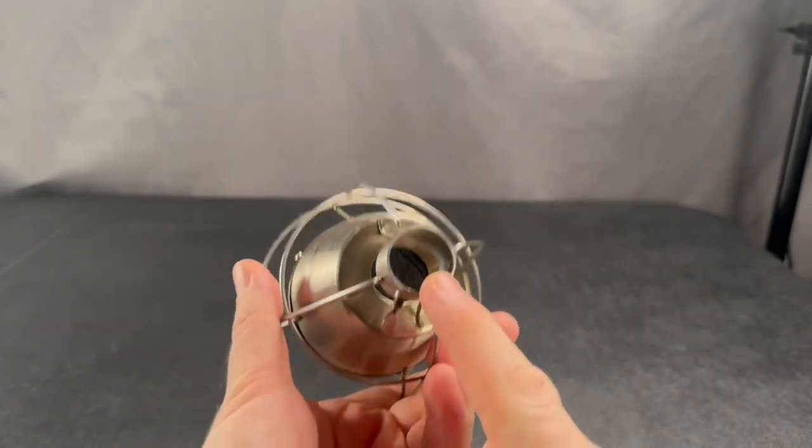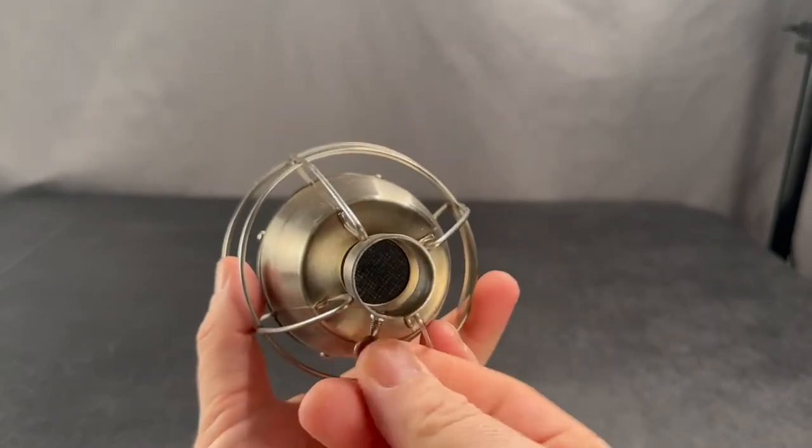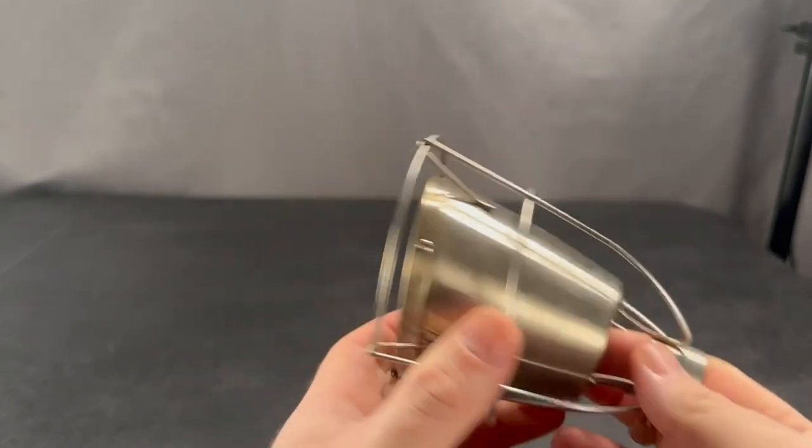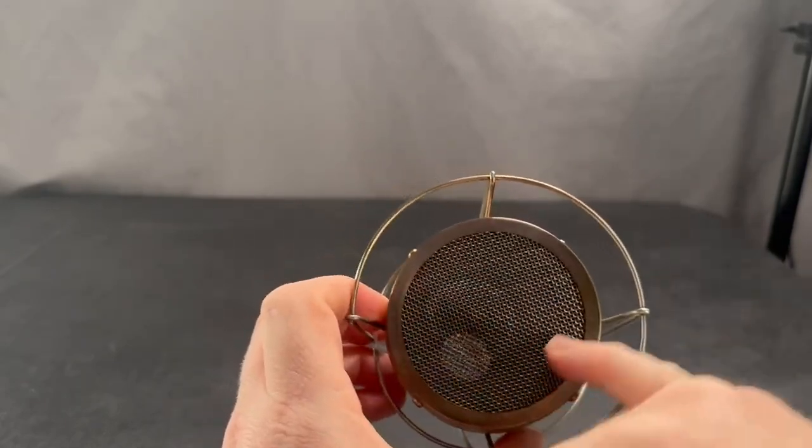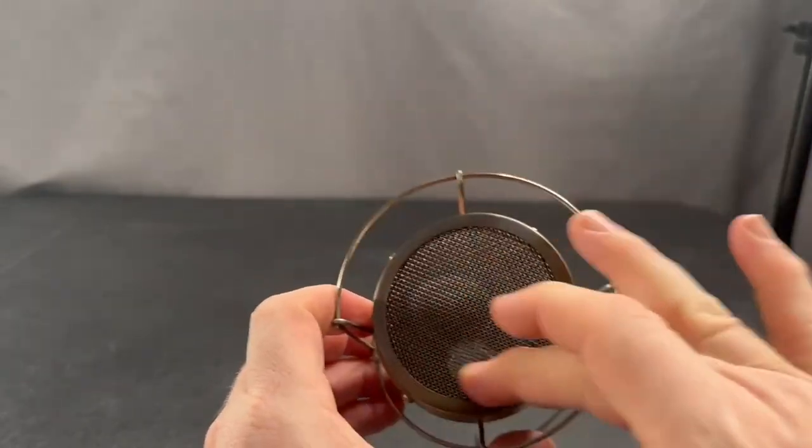So you're going to hook up a propane torch that goes right in here. Here's the little locking mechanism here and then it blows the fire into here and there's a screen mesh inside that captures all the heat and puts it nice and even.